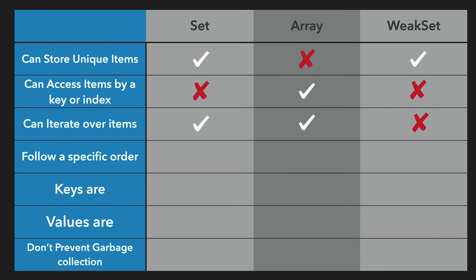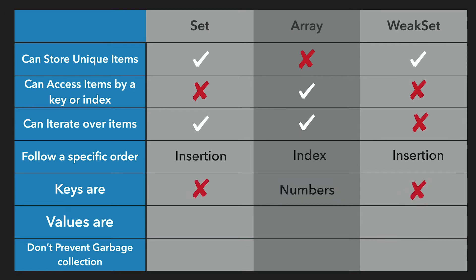JavaScript orders items in the Set by the order of insertion. You may argue that the same is true for arrays, but arrays use an index — I could add an item at index 10, then an item at index 2. As mentioned, Set and WeakSet keys and values are the same, but array keys are indexes which are numbers.